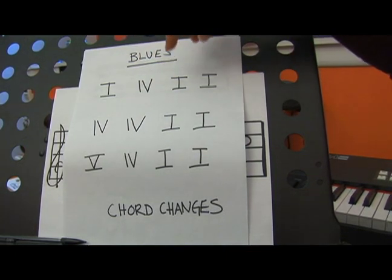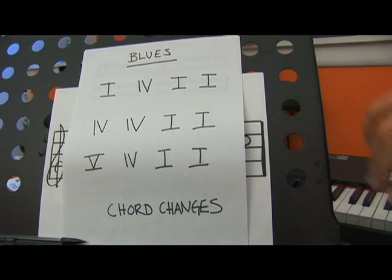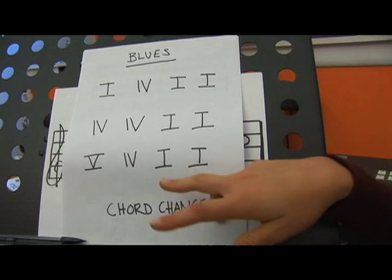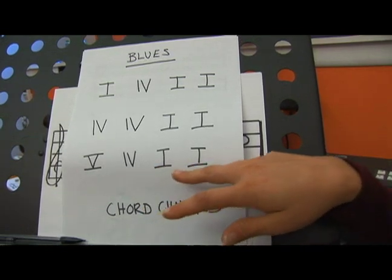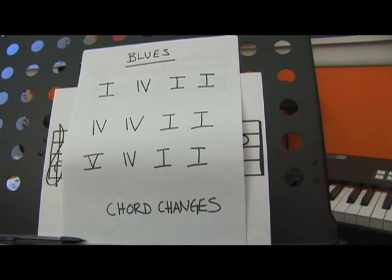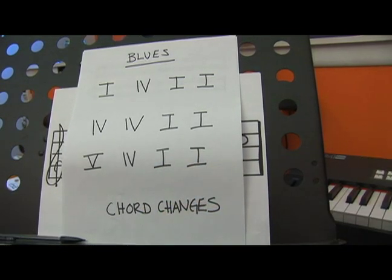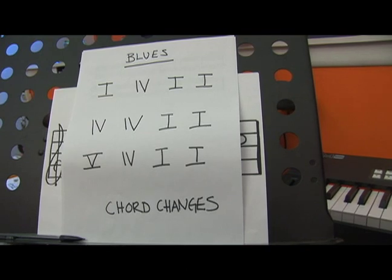And we have a major V chord, IV, then I, I in the last four bars. All together this fits a twelve bar form, known as the blues form.